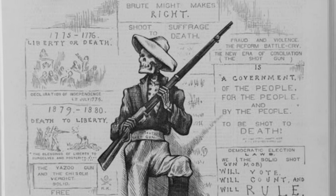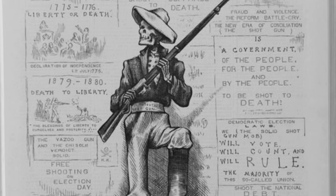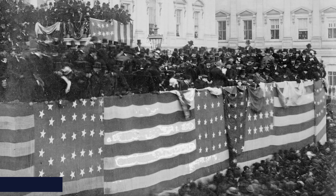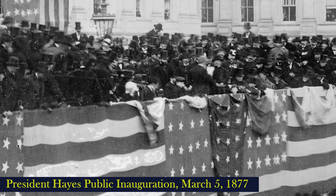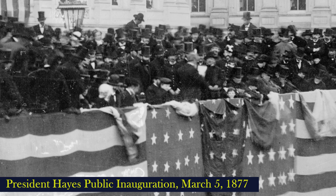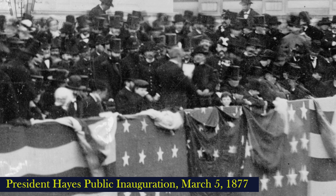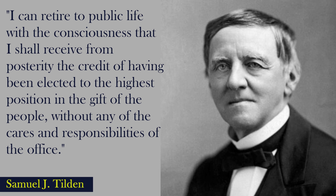Hayes insisted that Democrats in those states pledge to uphold the civil and voting rights of black and white Republicans. Once the Democrats agreed, Hayes pulled those remaining federal troops out of the South, effectively ending Reconstruction. White Southerners quickly turned their backs on their promises, systematically disenfranchising black voters through poll taxes, literacy tests, and intimidation. Democrats in the South created a segregated society that used terror and violence to oppress African Americans. Black Republican voters felt betrayed as they became more and more disenfranchised in southern states.